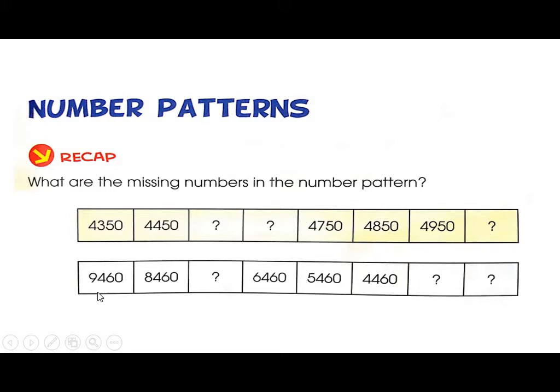Second list: 9,460, 8,460, one number missing, then 6,460, 5,460, 4,460. Going back to the first pattern, the missing numbers are 4,550, 4,650, then continue.